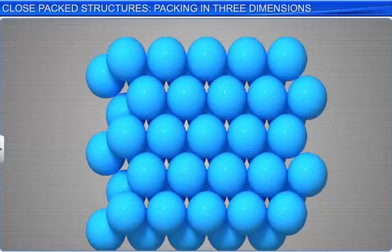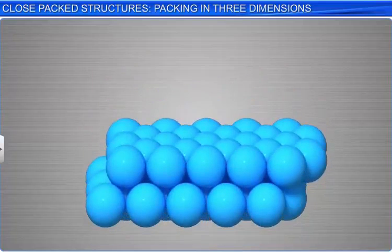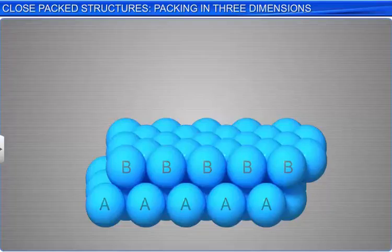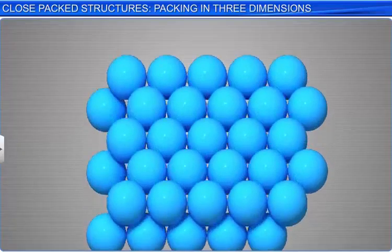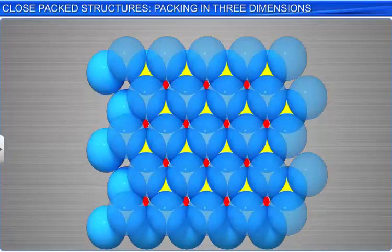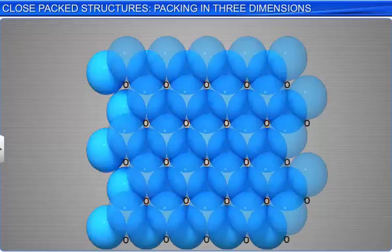As the spheres of the two layers are aligned differently, let the arrangement of spheres in the first layer be referred to as A-type and in the second layer as B-type. A closer look at the arrangement indicates the formation of two different kinds of voids marked as O and T.